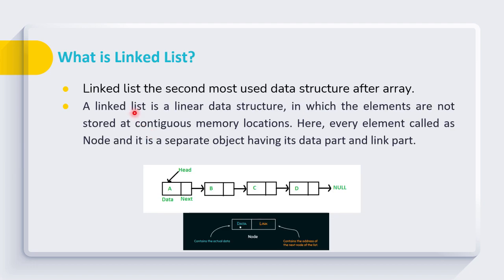LinkedList is the second most used data structure after array. A LinkedList is considered as a linear data structure in which elements are not stored in contiguous memory locations. In a LinkedList every element is stored as a separate object, and these elements are known as nodes.